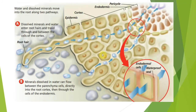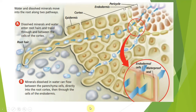Here you can see the structure of a root. Water and dissolved minerals move into the root along two pathways. Minerals and water enter the root hairs and travel through and between the cells of the cortex. Minerals dissolved in water can flow between the parenchyma cells directly into the root cortex, then through the cells of the endodermis.